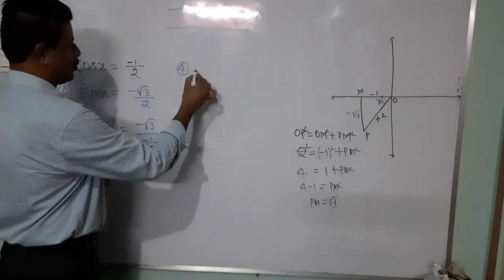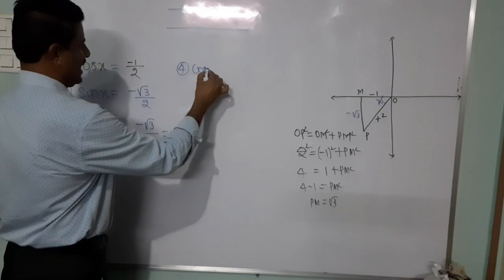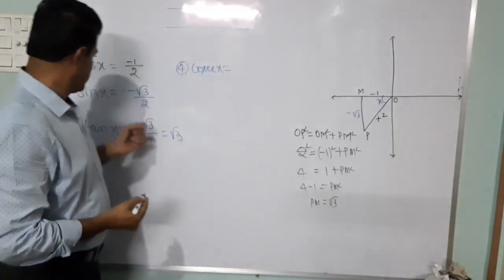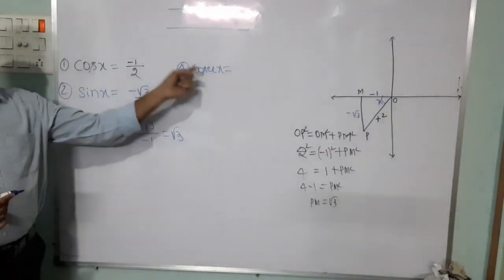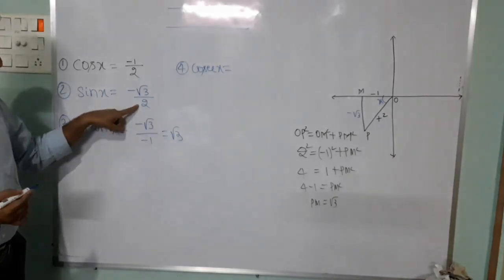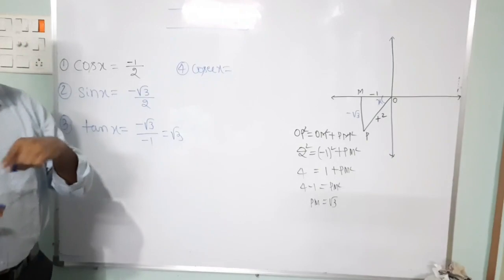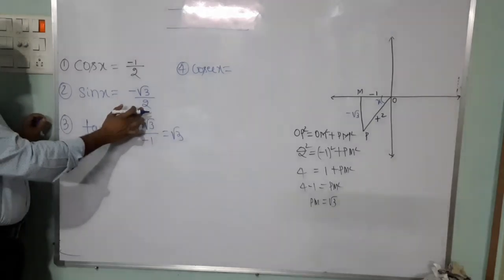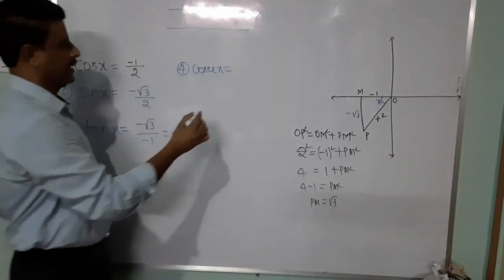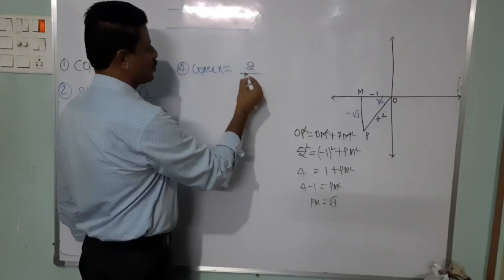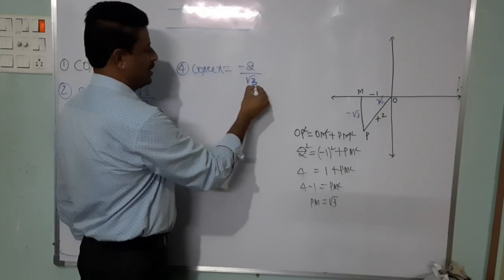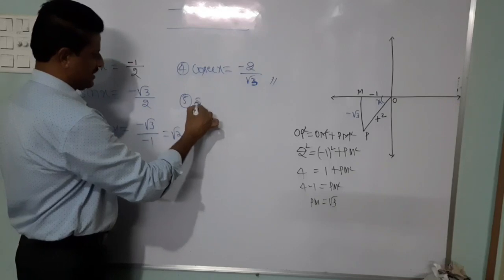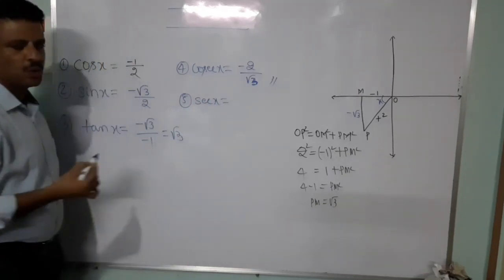The fourth ratio is cosecant x. Cosecant x is the reciprocal of sin x. Taking the reciprocal means numerator goes to denominator and denominator goes to numerator. Here 2 is the denominator, so it goes to the numerator: cosecant x equals 2 divided by minus root 3, otherwise written as minus 2 by root 3.